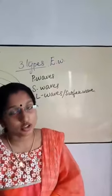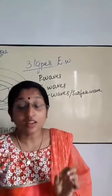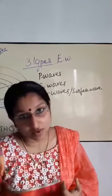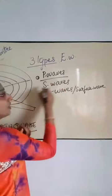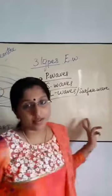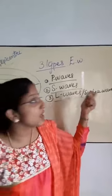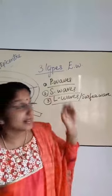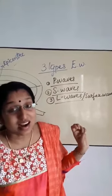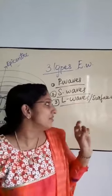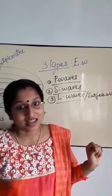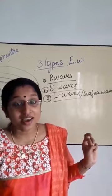There are three main types of earthquake waves: P waves, S waves, and L waves. P waves are longitudinal waves. S waves are transverse waves. L waves are surface waves.